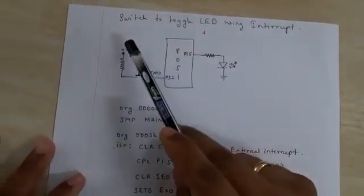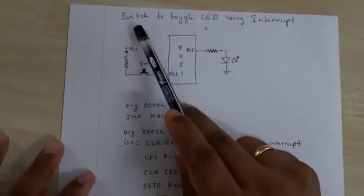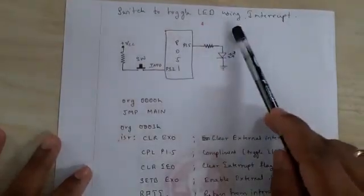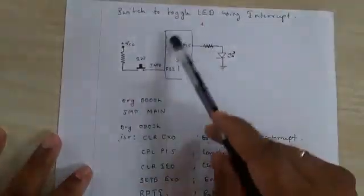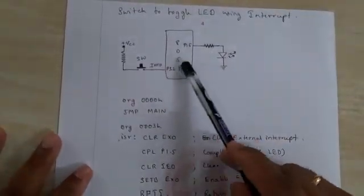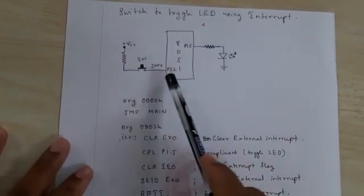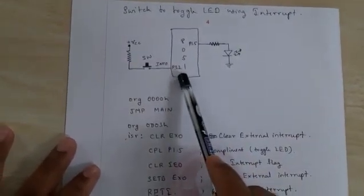Today we will see an experiment where we use a switch to toggle an LED using interrupts. The connection diagram will be like this: we are using an 8051 where pin P3.2 is nothing but interrupt 0.